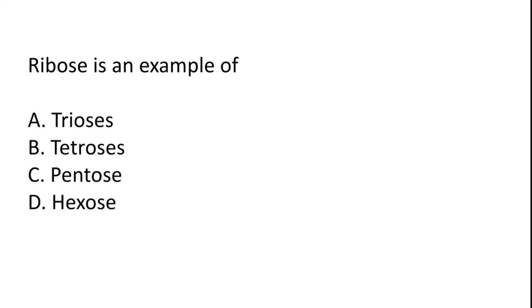Ribose is an example of: Triose, tetrose, pentose, hexose. So the correct answer is option C, pentose.